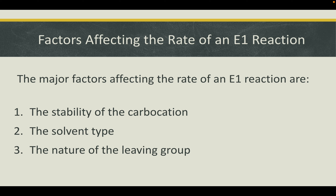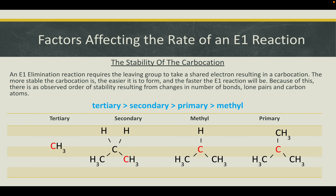Now we're going to take a look at the factors that affect the rate of an E1 reaction. The three major factors are: the stability of the carbocation, the solvent type, and the nature of the leaving group. For carbocation stability: an E1 elimination reaction requires the leaving group to take a shared electron, resulting in a carbocation. The more stable the carbocation, the easier it is to form and the faster the E1 reaction will be. There is an observed order of stability resulting from changes in the number of bonds, lone pairs, and carbon atoms.